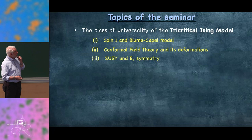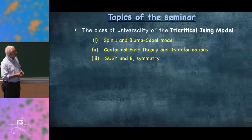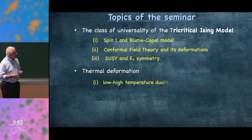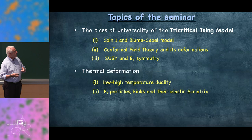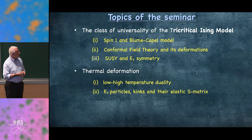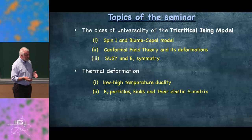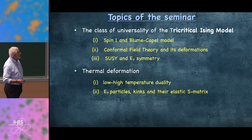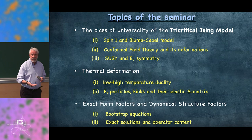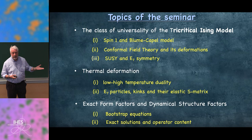I'm going to describe briefly this class of universality of the tricritical Ising model, which is related to spin-1 and the so-called Blume-Capel model. I'll present the conformal field theory and the deformations which make all these symmetries emerge. I'll briefly discuss the supersymmetry and E7, then focus on the thermal deformation, which gives rise to E7 particles that can be particles or solitons depending on which side of the phase — low or high temperature — you are.